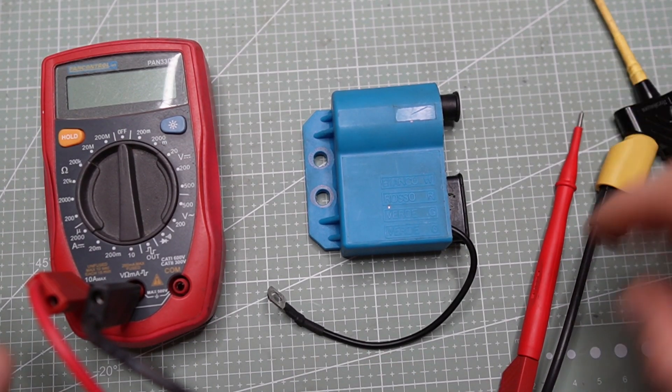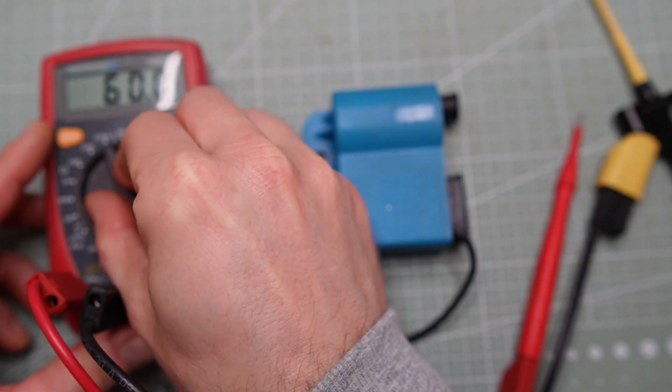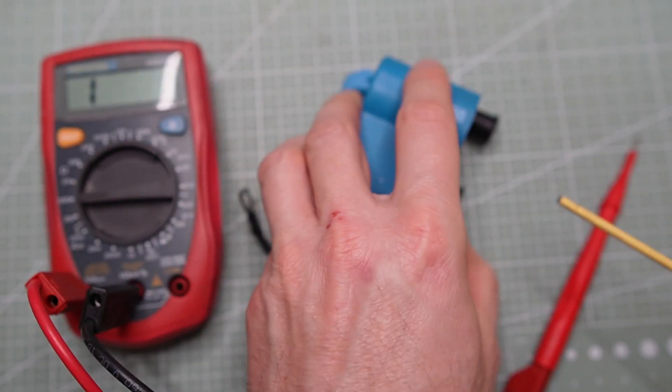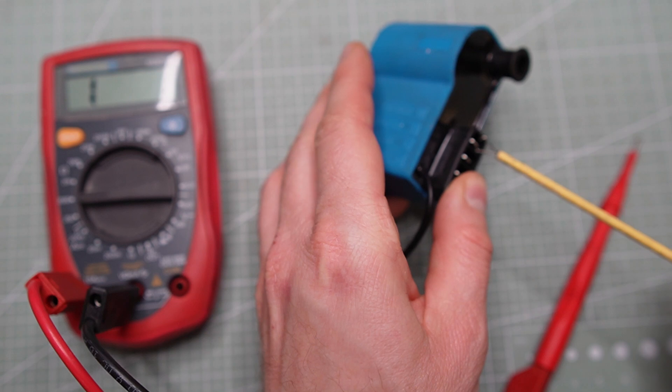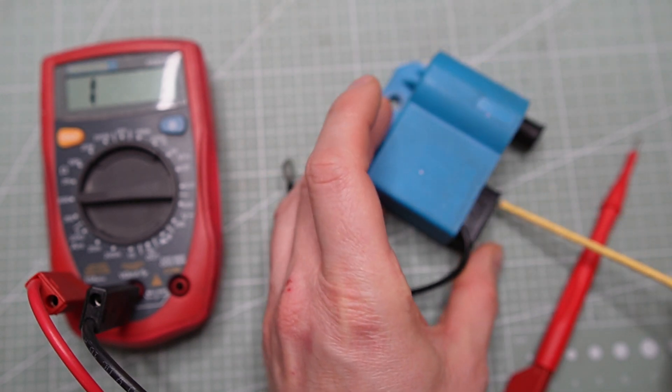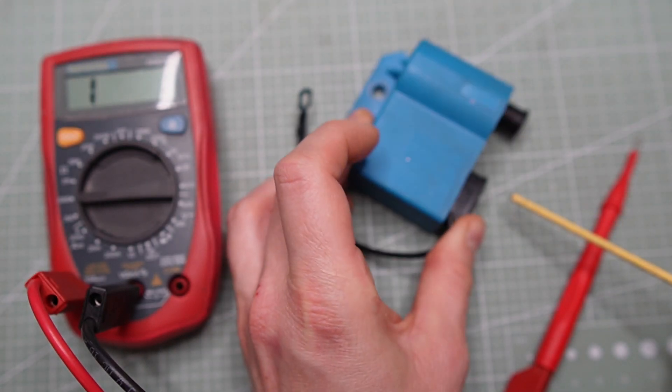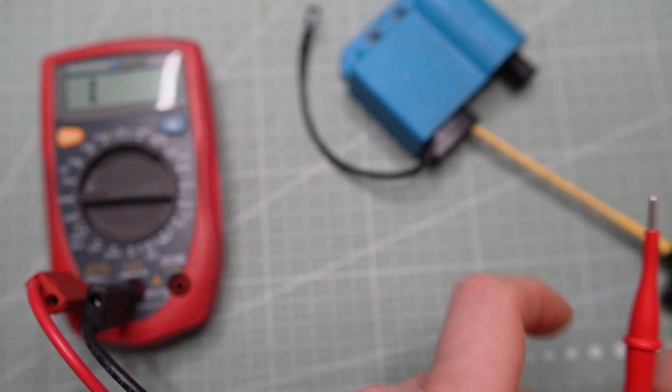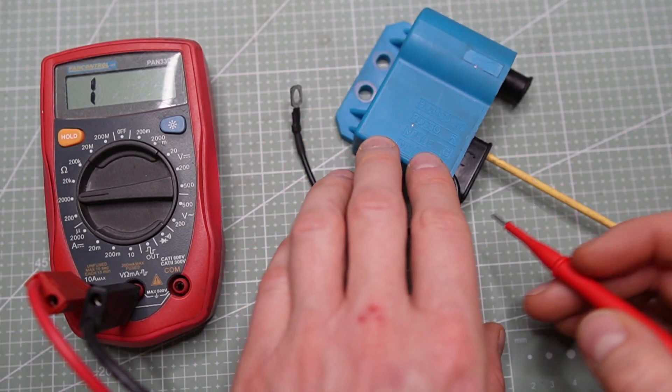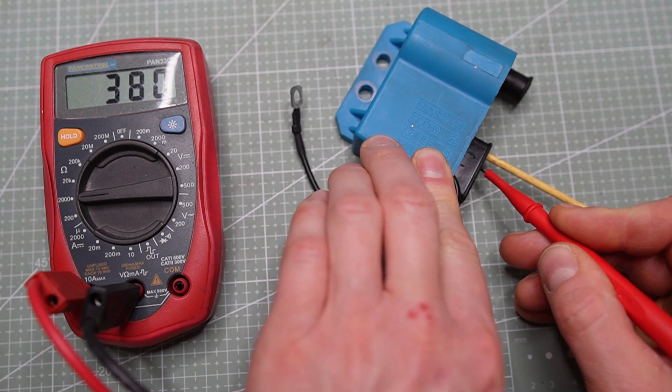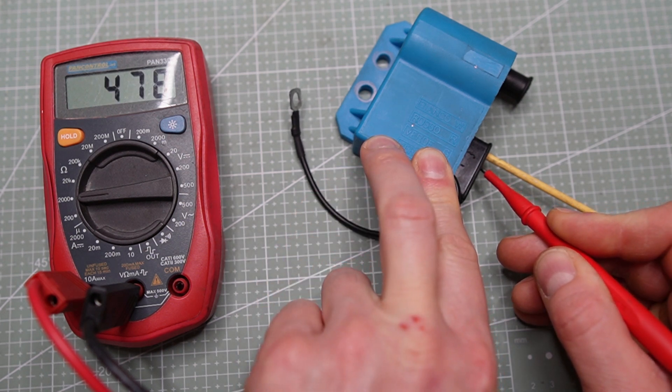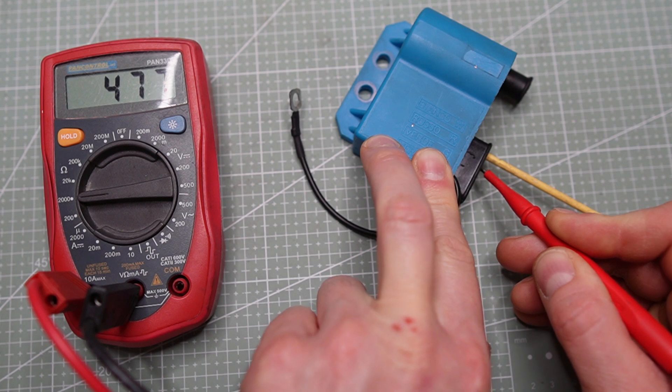Testing with the multimeter. So we set this on ohm, 2000, that's okay. We are picking the white cable and red. We should have around 500 ohm. That's okay. Very good.